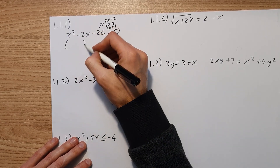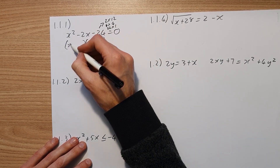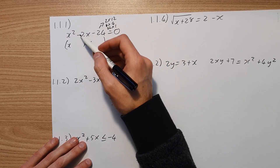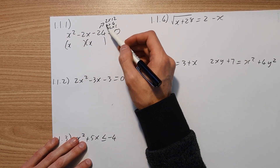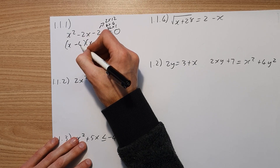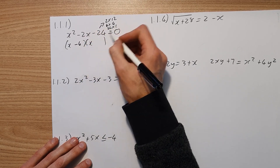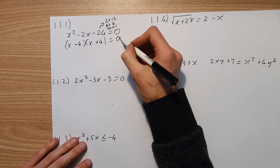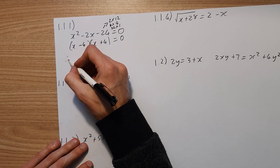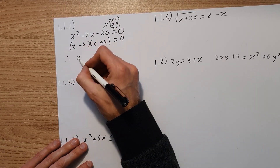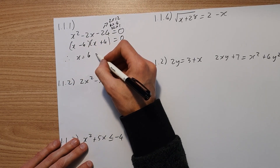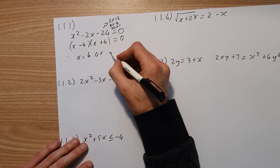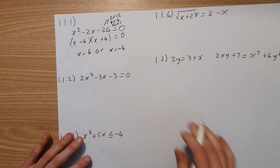So 2 brackets, x in each bracket. Because this number is negative, the larger number needs to take the negative — so minus 6, and then we have plus 4. That equals zero. Therefore, x equals 6, or x equals negative 4.